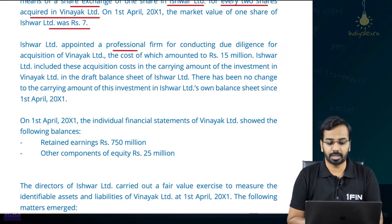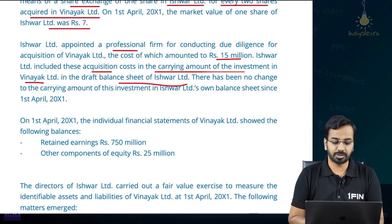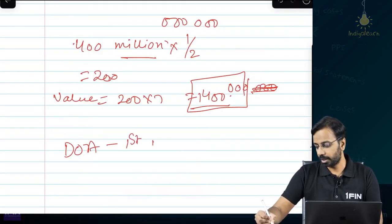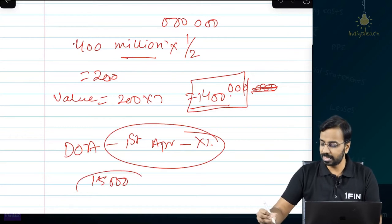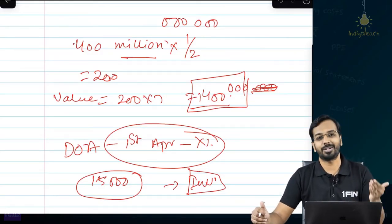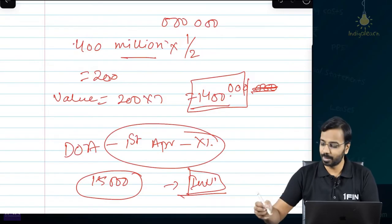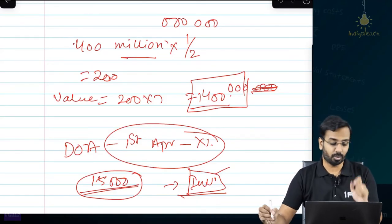Ishwa Limited appointed a professional firm for conducting due diligence for acquisition of Vinayak Limited, the cost of which amounted to 15 million. Ishwa Limited included these acquisition costs in the carrying amount of investment in Vinayak Limited in the draft balance sheet. There has been no change in the carrying amount of investment since 1st April year 1. Now, this transaction cost at the time of business acquisition will not be added to the cost of investment — it will be expensed. So this 15 thousand, which is the transaction cost, should be expensed and not considered as part of the cost of acquisition.